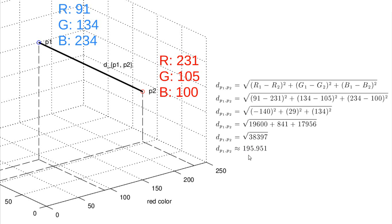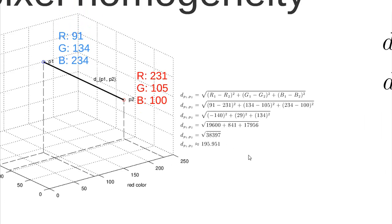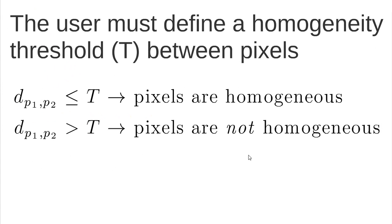The main idea of the region growing is to compute this distance between pixels and define very simple rules. The user must define what we call a homogeneity threshold T between two pixels. If that distance between two pixels is smaller than a threshold, this means that the pixels are homogeneous. However, if the distance between two pixels is higher than the threshold, it means that they are not homogeneous.